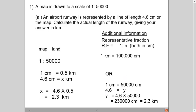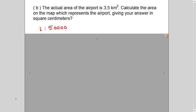Let's see the second part of the question. The second part of the question is saying that the airport has area 3.5 square kilometers. You have to calculate this area on the map. And it is saying square centimeters. So now let's see. What is given to us is 1 is to 50,000. Both are in centimeters. And this is about area. So we need to change our scale into area first.